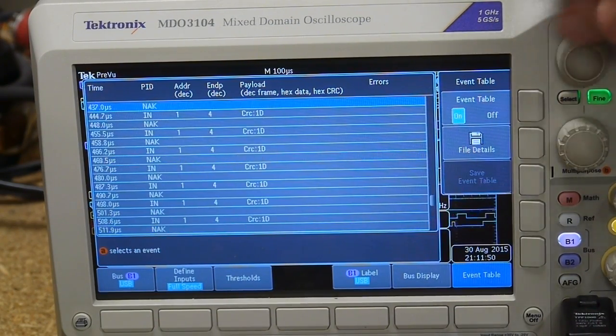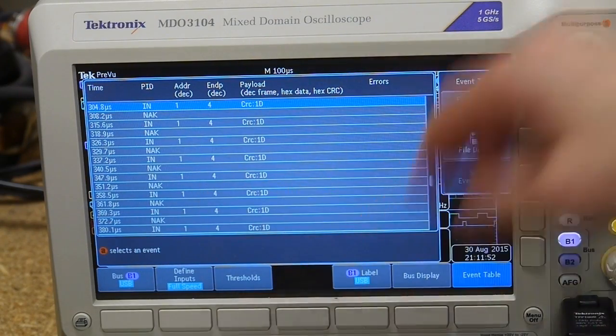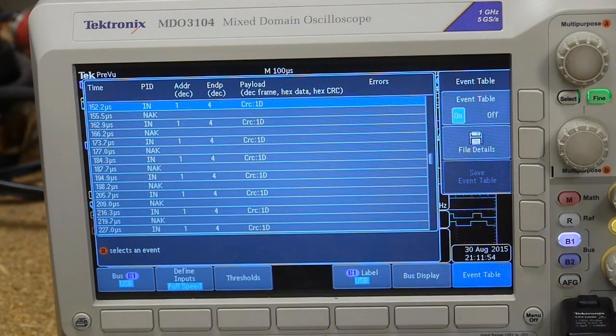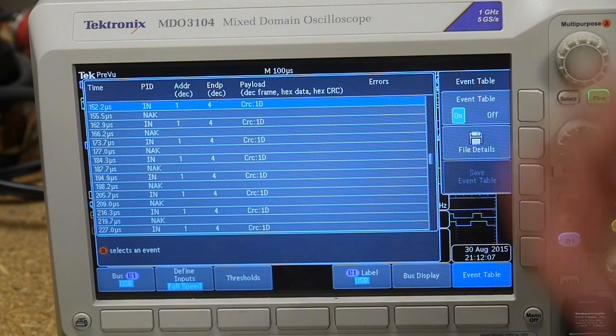You'll also notice there's a lot of these NAK packets. Remember that USB is entirely controlled by the host, so the client—the microcontroller—can't tell the host that it wants to send data. It has to wait for the host to ask.